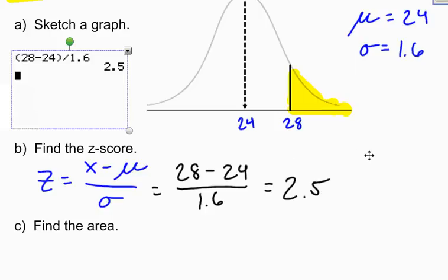Alright. Now I can go ahead and find the area under the curve. I know that my z-score in the center of my distribution is 0, and I now know that the z-score for 28 is 2.5. And I can find the area that is shaded in yellow.